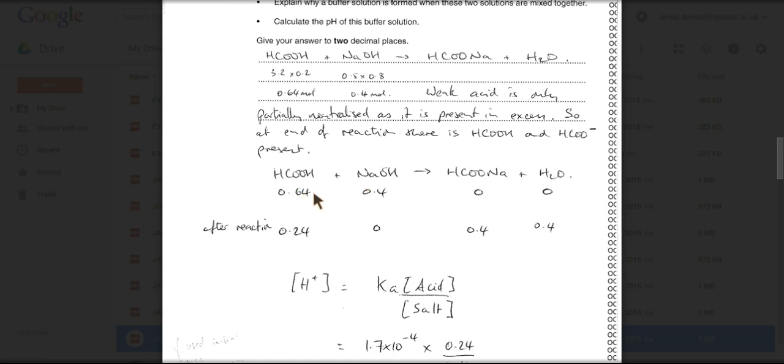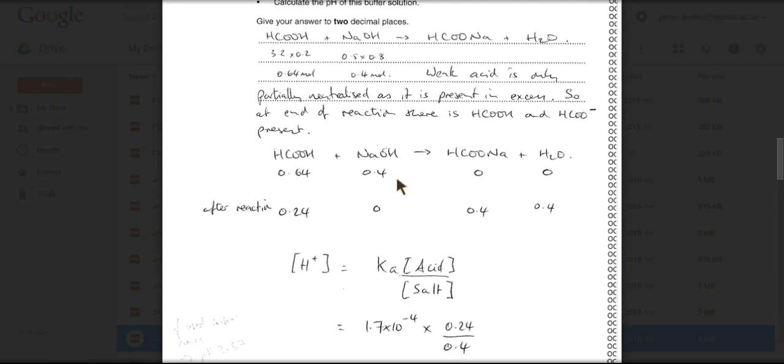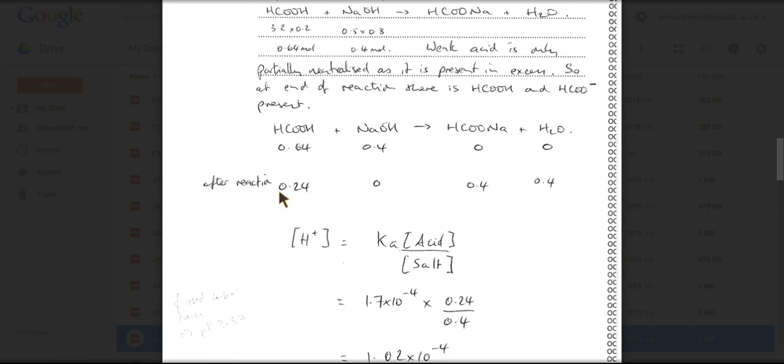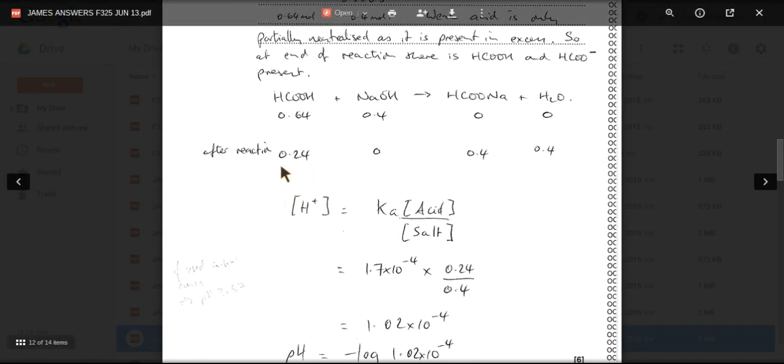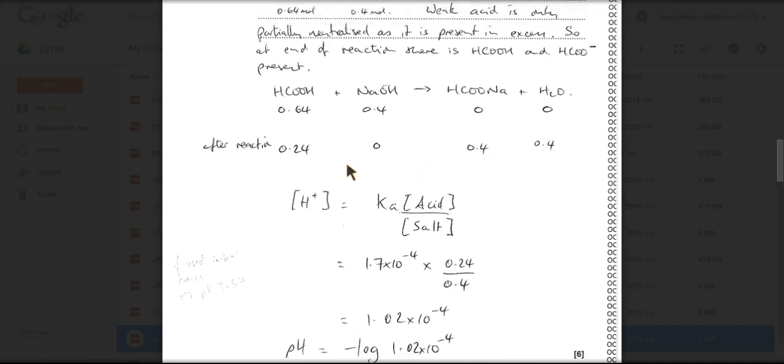So there's my treatment of those numbers. So we've got 0.64, 0.4, 0, 0. This is a bit like the ice method. So these are the initial moles. After the reaction, you'll have 0.24 of that left. We've got none of that, but we've got 0.4 of this and 0.4 of that. That's not relevant. So we're going to base our H plus calculation or our pH calculation on these values. Remember the volume's one. So these moles here are effectively the concentrations.